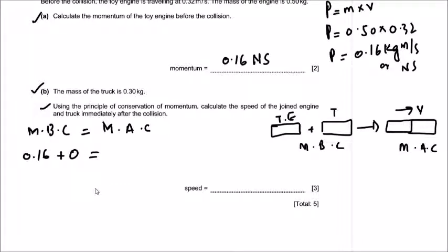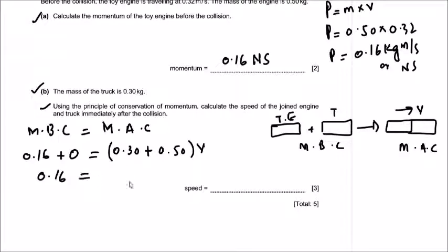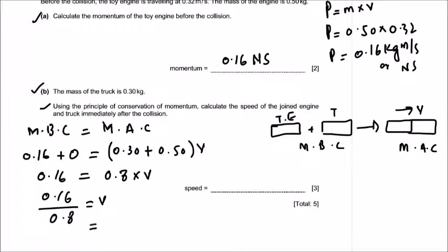After the collision, the combined mass is 0.30 plus 0.50, which equals 0.80 kilograms, moving at speed v. So: 0.16 equals 0.80 times v. Rearranging: v equals 0.16 divided by 0.80, giving v equals 0.2 meters per second. The speed of the joined engine and truck after the collision is 0.2 meters per second.